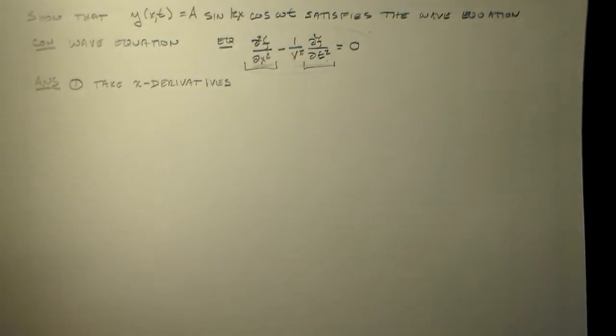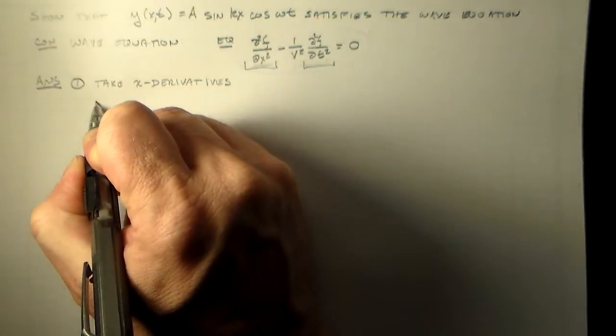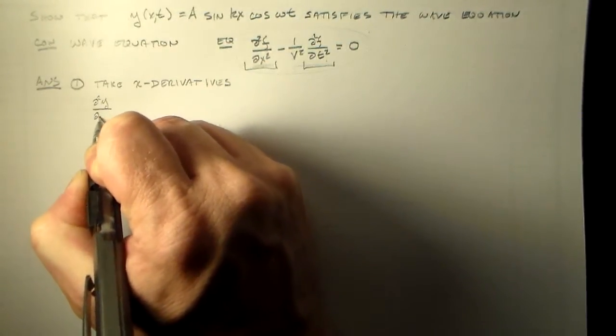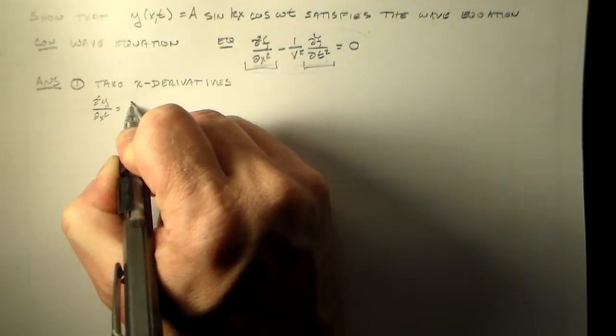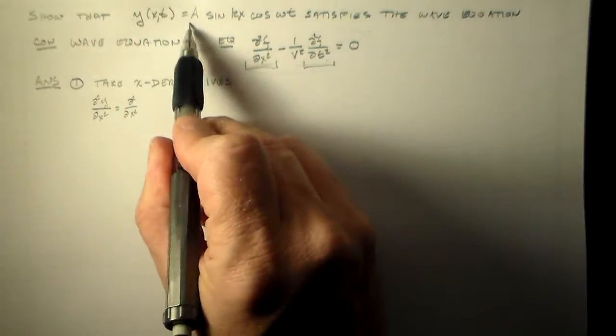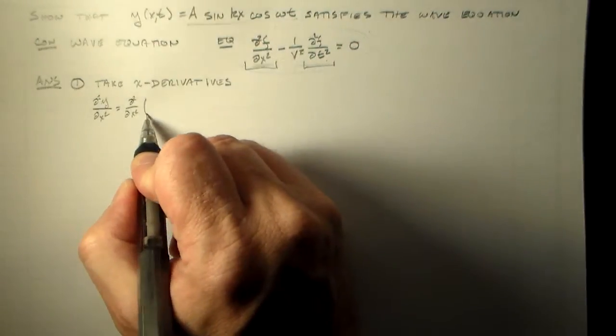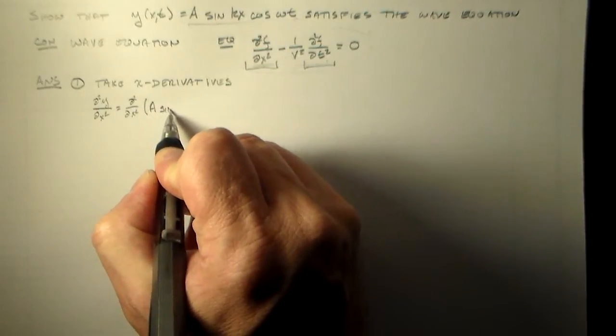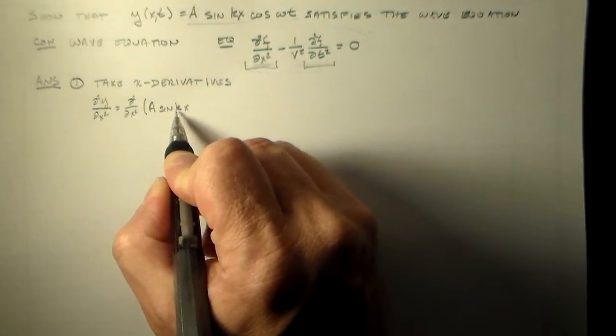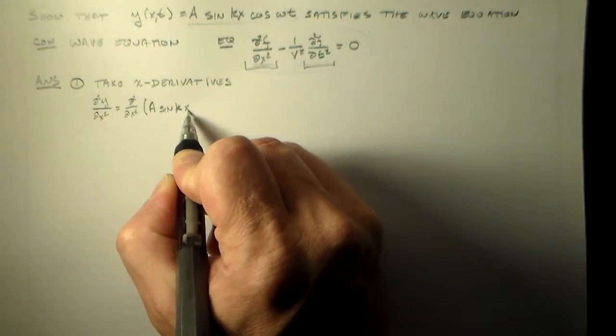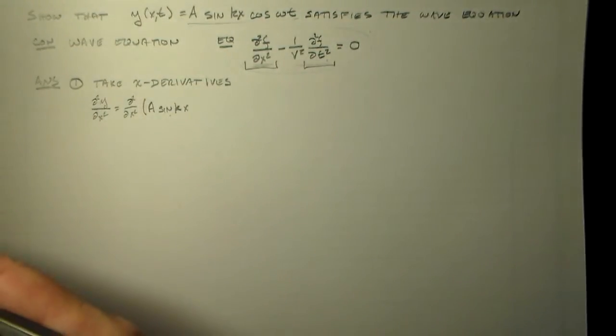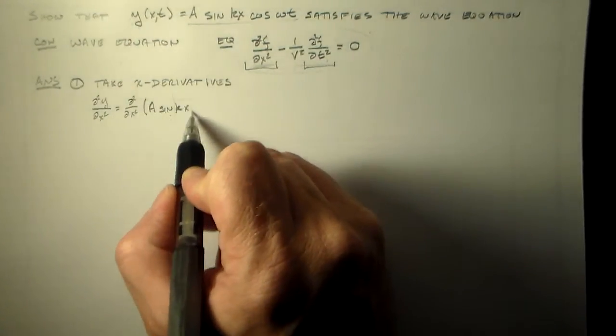And this is fairly simple, fairly straightforward. d squared y dx squared is equal to what? Well, d squared dx squared of this thing, which is a sine kx, wave number times x. So you always have to have a wave number times x in the sine, because otherwise it's not unitless. This guy has to be unitless in here.